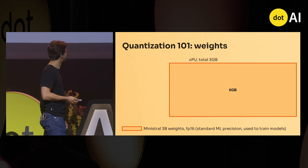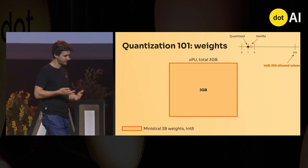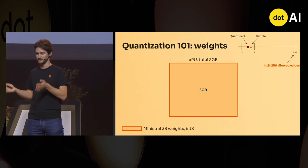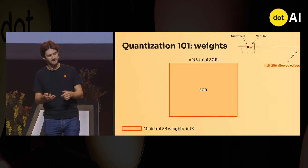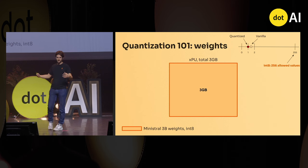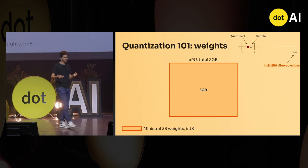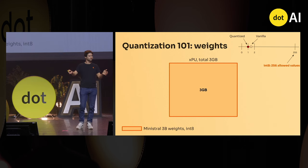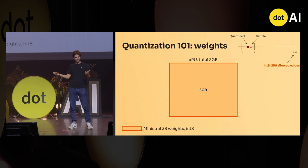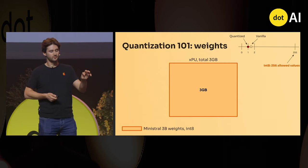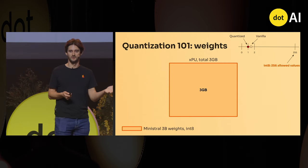So you need to quantize. The first idea is to reduce the precision of the weights so each weight is not 2 bytes but 1 byte. You take the weight matrix, scale it to the range of integers you target — here 0 to 2^8 minus 1, which is 255 — round the weight to the nearest integer, then descale.